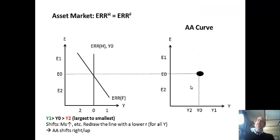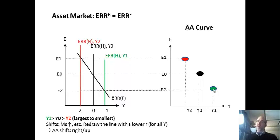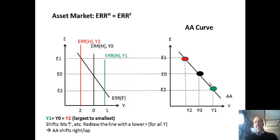In the asset market, we maintain equilibrium by being at the crossing point. Starting at E0 with Y0 assumed, if we raise income to Y1 — a larger GDP — we wind up with a stronger currency. So larger GDP and a stronger currency go together at this green point. With a smaller GDP, the rate of return at home falls, giving a weaker currency. These three points are equilibrium. We can fill in the gaps and get a line, which is the AA curve.